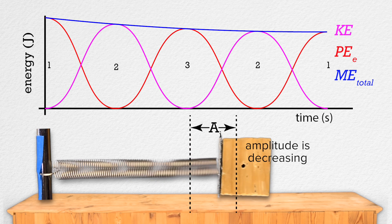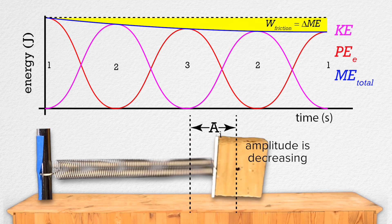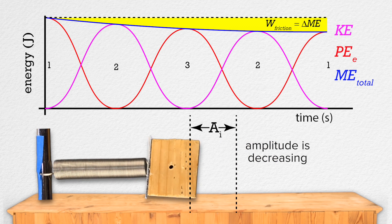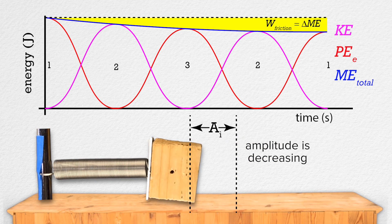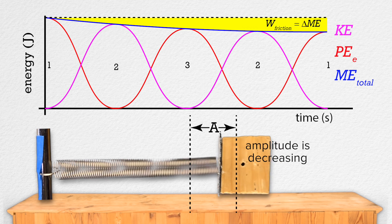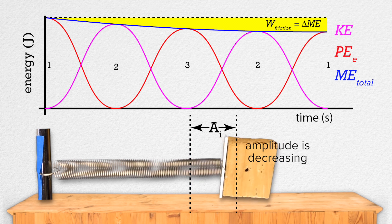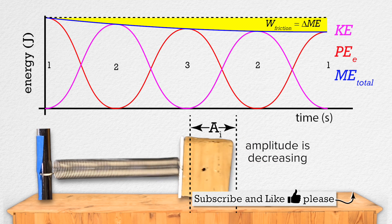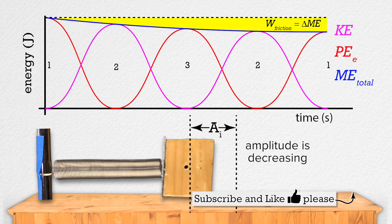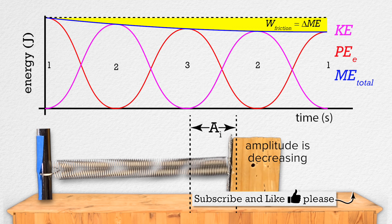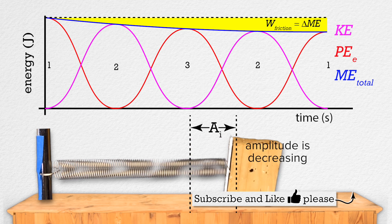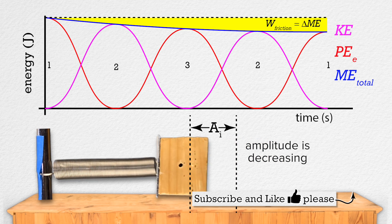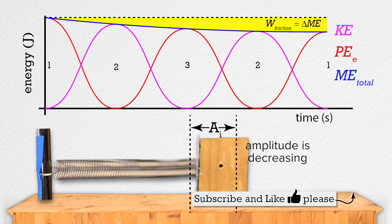The one thing I will add is that the total mechanical energy of the mass spring system, plus the total energy removed from the system as heat via work done by the force of friction, will always add up to the initial total mechanical energy of the system. This is because energy can neither be created nor destroyed — it simply changes forms. You can see that on the graph because the total mechanical energy of the system, plus the energy dissipated via the work done by the force of friction, creates a horizontal line, indicating that the sum of those quantities remains constant. Thank you very much for learning with me today. I enjoyed learning with you.